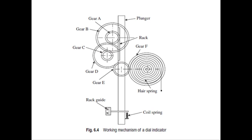As gear A rotates it transfers the motion to gear C, and attached to gear C is another gear D which meshes with gear E. Gear F is mounted on the same spindle as the indicator pointer. The overall magnification obtained in the gear train is very high. A hair spring loads the gear train against the direction of each angle, eliminating backlash caused by the gear wheels. The gears are precision cut and easily mounted on jewel bearings.